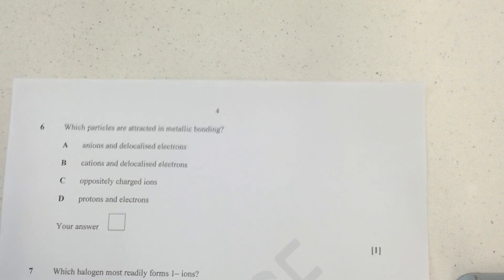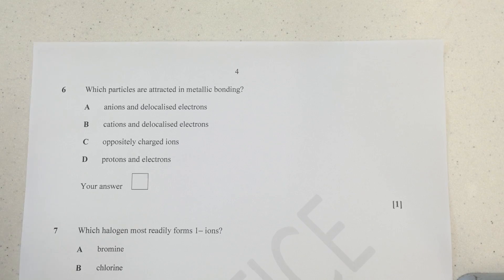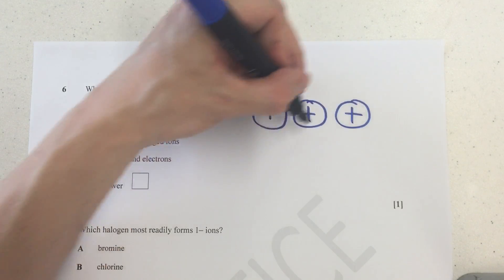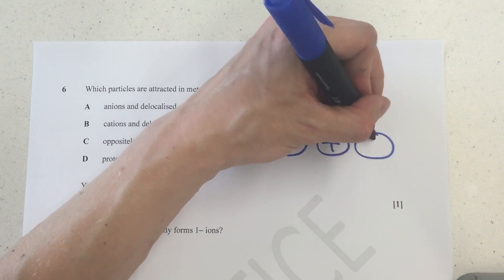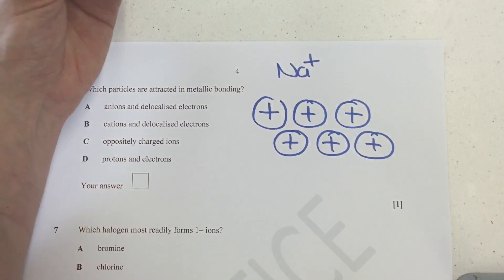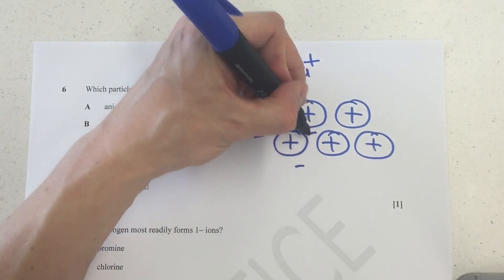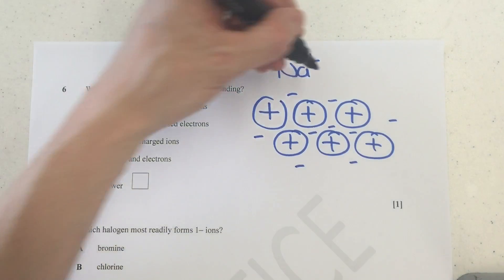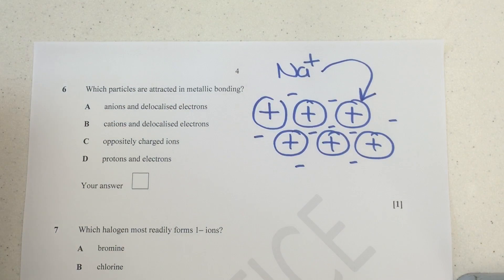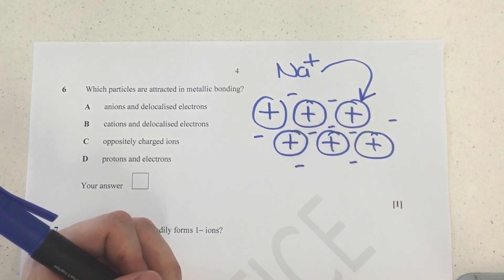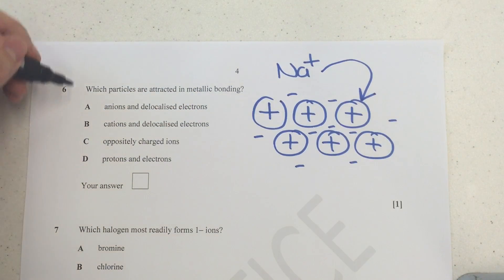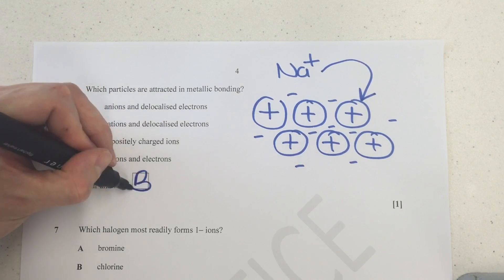Moving on with the next question then. Question six here, which particles are attracted in metallic bonding? So just before we attempt the question, we want to remind ourselves what metallic bonding looks like in terms of a diagram. So we would have positive metal cations. For example, if this was a diagram for sodium, sodium is Na+, so if this was a diagram of sodium metal, we'd have all of our positive metal cations stacked together like so. And the delocalized electrons thrown around here, just sort of swimming around the outside of those. Now, the attraction, therefore, isn't actually between two of the positively charged cations of sodium. It's actually between the cations and the delocalized sea of electrons. But I think lots of people forget that. If we have a look down this list, we can see that the only one that really describes that well is B.